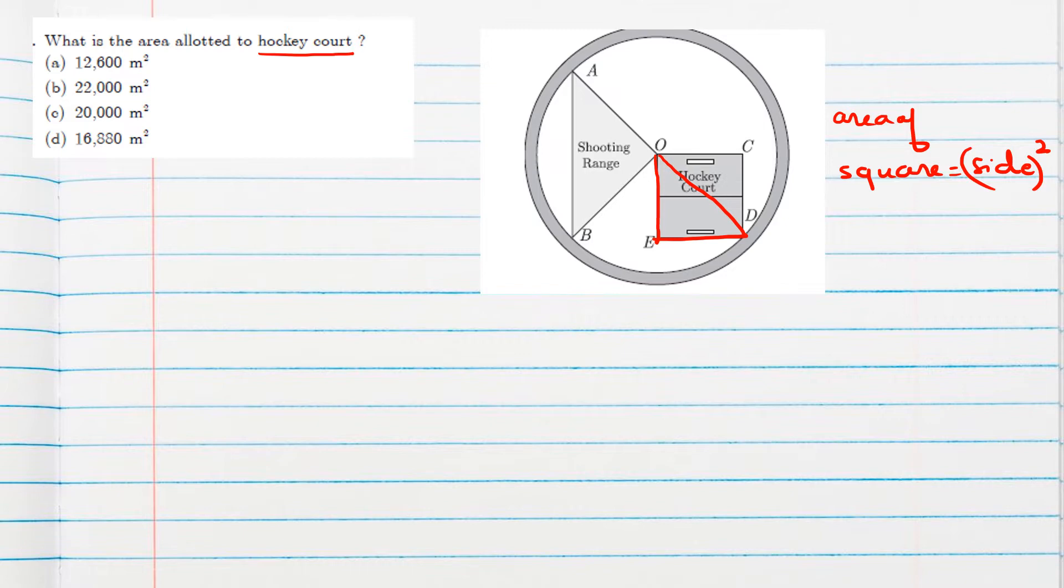OD radius is given 200 meters. In the previous question, we took radius as 200 meters. So now, if this is 200 meters and side we can suppose as A, then by Pythagoras theorem, since in square also angles are 90 degrees, we can get A square plus A square equals 200 square. So 2A square equals 200 square.